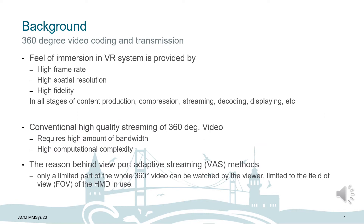In 360-degree video, the field of immersion is provided to the viewer when frame rate, spatial resolution, and picture fidelity are high. These requirements should be met in different stages of content production, compression, streaming, decoding, and displaying. However, these are challenging given transmission bandwidth constraints and decoder capability constraints at the viewer's device. It is not feasible to transmit the whole content in a high quality manner. On the other hand, when a viewer watches 360-degree content, only a limited part — limited to the field of view — is required. Therefore, viewport adaptive streaming methods have been developed.